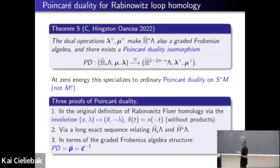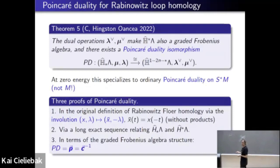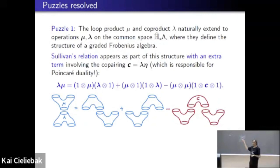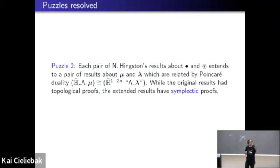So Poincaré duality comes to us in a variety of different manners — we have at least three different proofs. The puzzles are now resolved: we've extended product and coproduct to the same space, they satisfy a nice graded Frobenius algebra structure. Sullivan's relation is not part of that structure — what is part of it is Sullivan's relation with an additional term, which is exactly the term responsible for Poincaré duality. And for each of Nancy Hingston's pairs of dual results, we can show they're really the same result under Poincaré duality. Thank you for your attention.